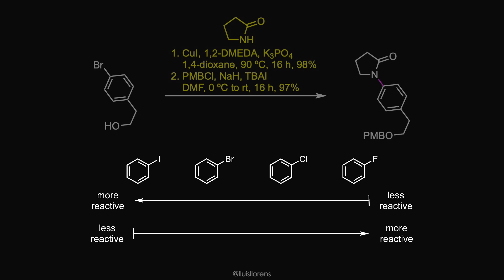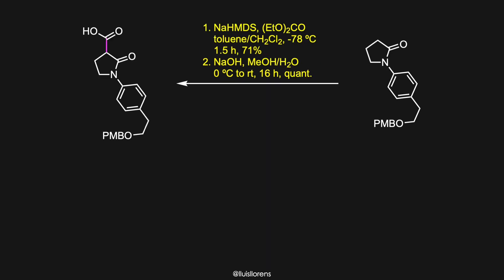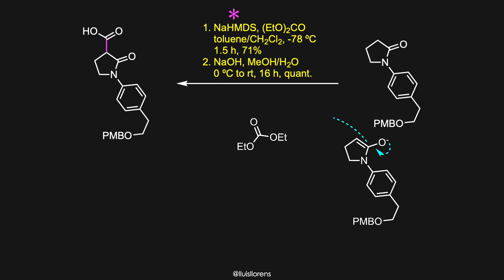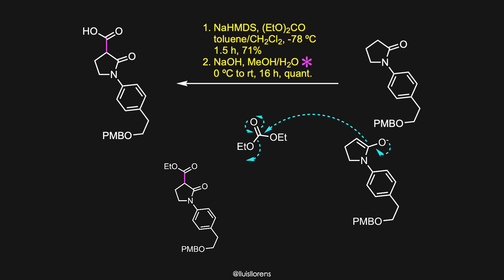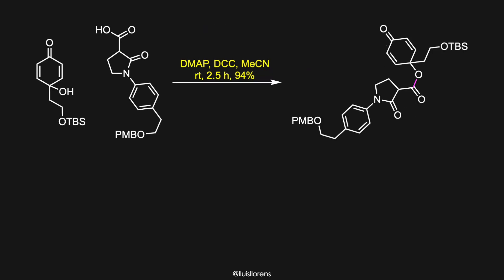The opposite trend is observed in uncatalyzed SNAr reactions. The primary alcohol was then protected with para-methoxybenzyl. Alpha-acylation of the lactam was carried out using sodium HMDS and diethylcarbonate to afford the diethyl ester. Saponification of the diester under aqueous basic conditions followed by acidification delivered the carboxylic acid fragment. The carboxylic acid was then coupled with an alcohol via Steglich esterification under standard coupling conditions.